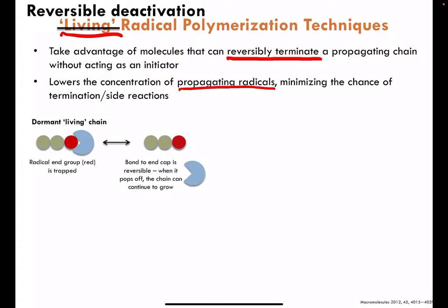In a generic approach, if we start at this point, we recognize that our initiator could be present at the left of the molecule. We'd have our first monomer tethered to the next monomer, and then we would have our radical at the end. The idea is to find some sort of molecule that can cap that radical — notice the double-headed arrow here — and have a reversible capping of that radical such that we can trap it in a dormant stage. Because we have bonding between the Pac-Man and our radical, the radical is trapped and no longer there; it is rendered dormant.